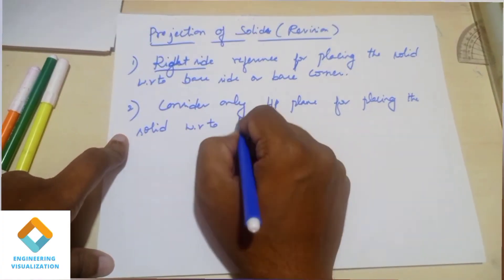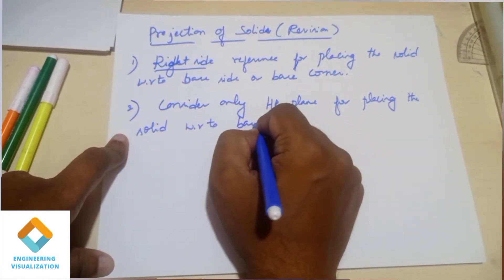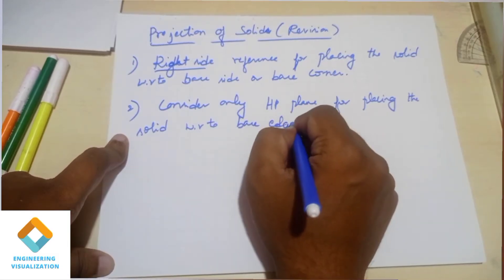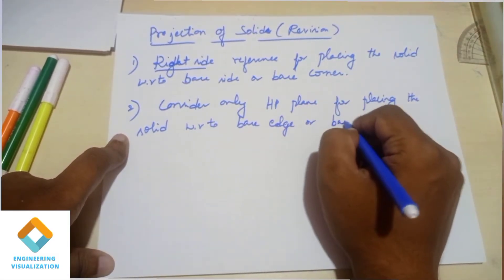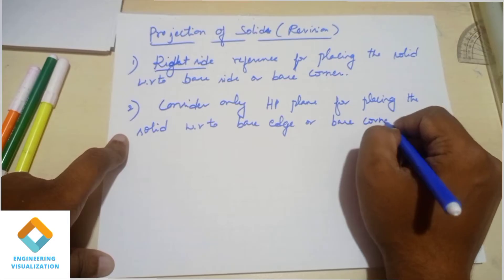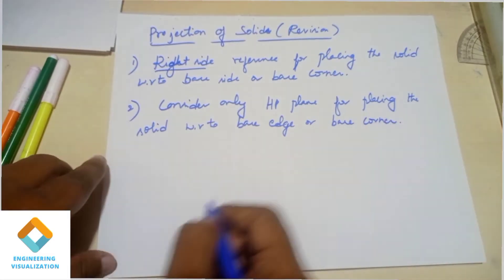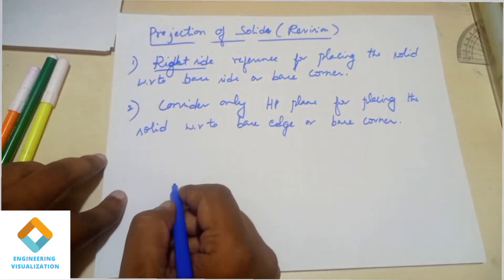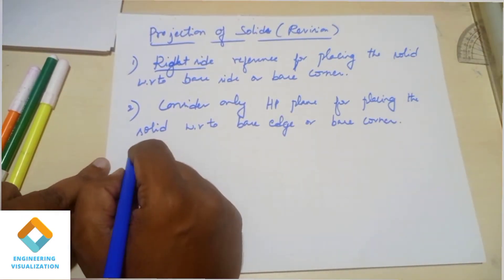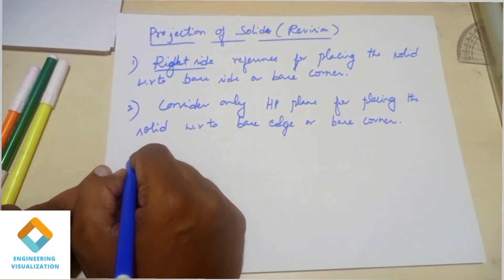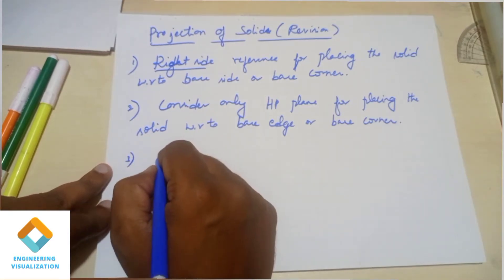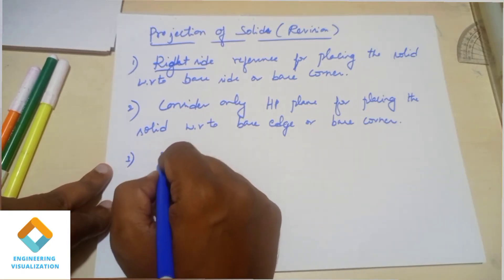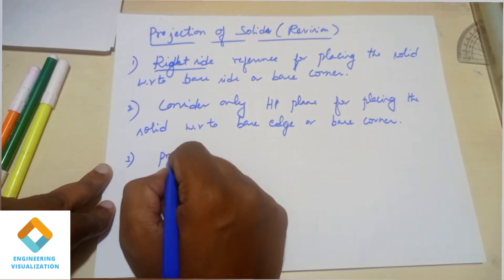The first position is the solid — not on the HP plane, there is no VP plane. You don't want the first position of solid; the full problem is wrong. The second point — the main point — is to come along the SP plane. The first position means the gap.